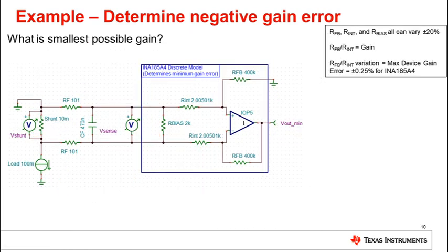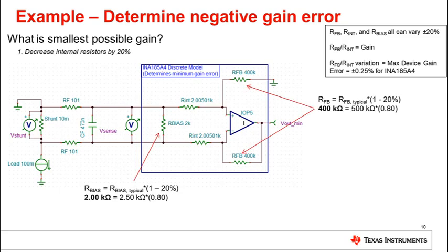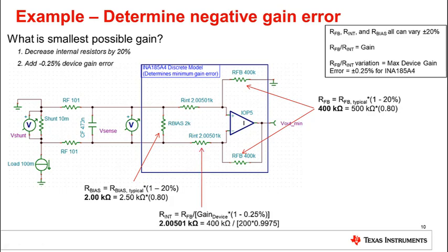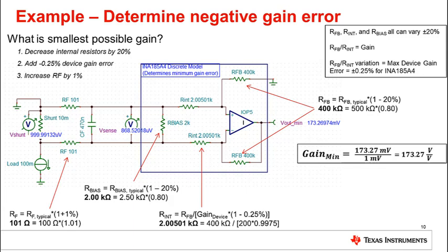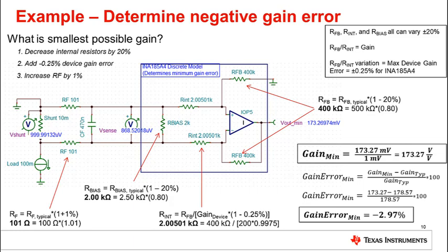Similarly, we can now determine the low end of the gain error variance. To minimize the gain, we will decrease all internal resistors by 20%, which will lower the input impedance of the device. Then we will assume the device has internally a worst case gain error of negative 0.25%. Finally, increase the input filter resistors by 1%. We then perform a DC simulation and determine the minimum worst case gain of 173.27 volts per volt. Comparing this to the typical gain, we calculate a final minimum gain error of negative 2.97%.